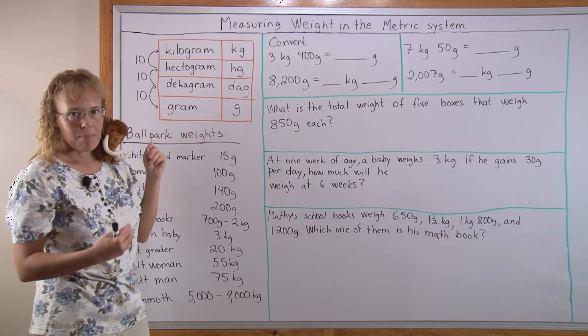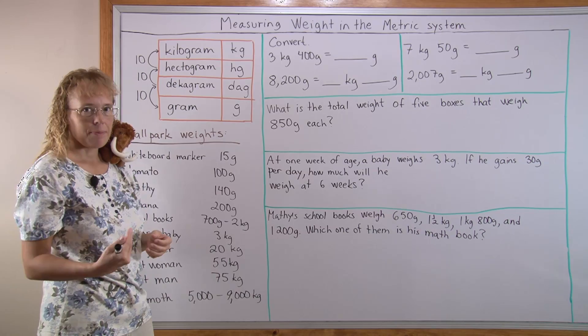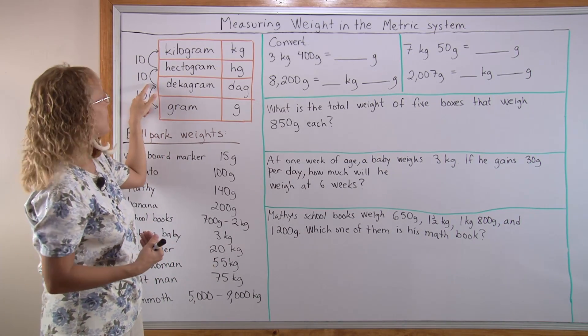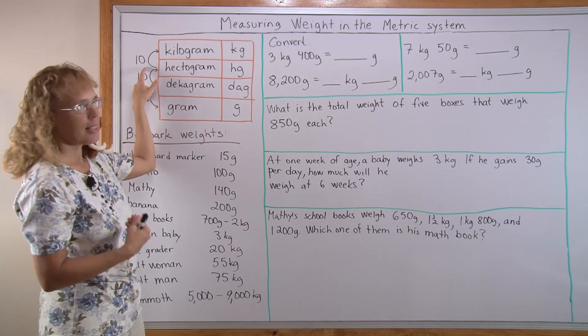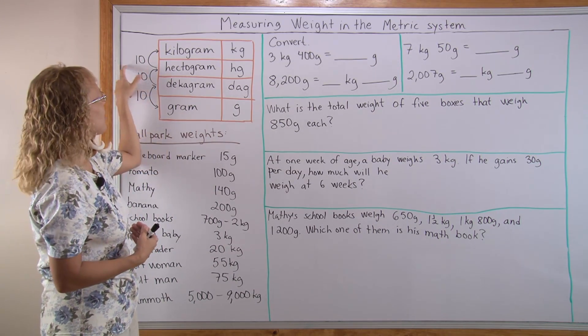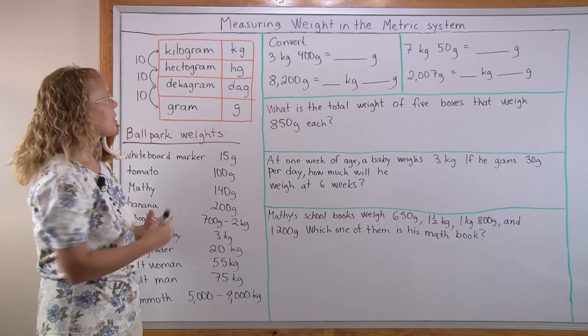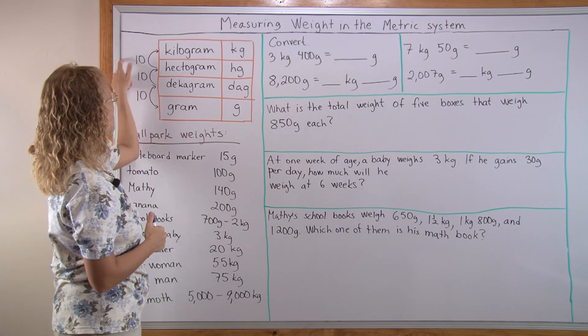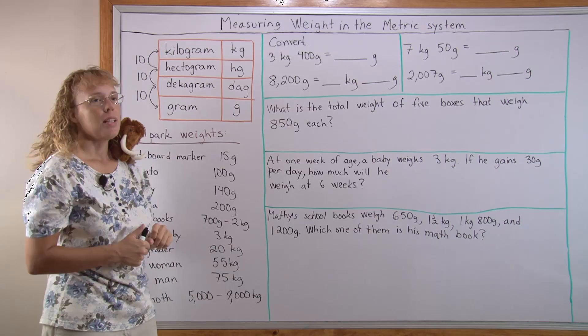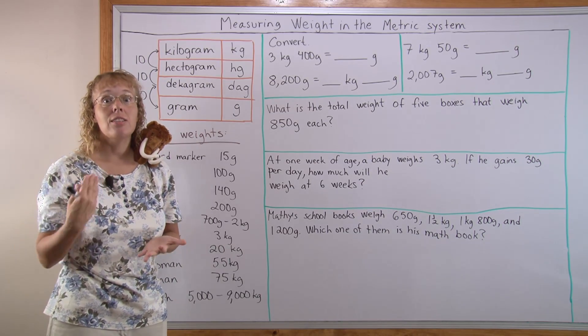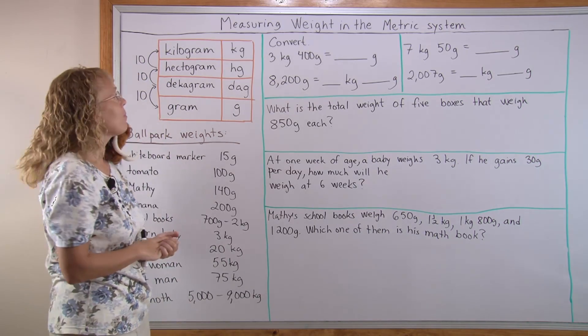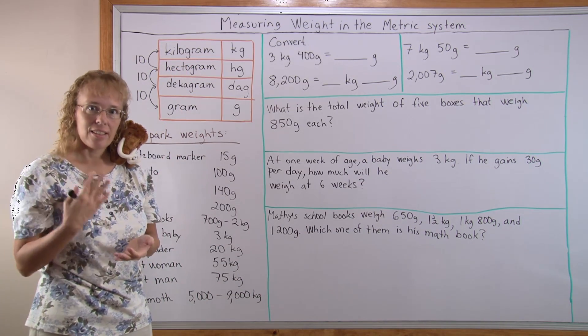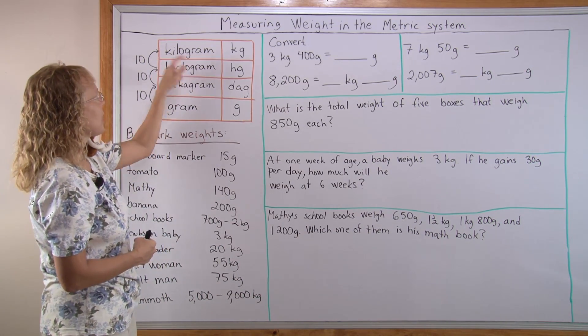We have gram as the basic unit for measuring weight. Ten grams makes a decagram. Ten decagrams makes a hectogram and then ten hectograms makes a kilogram and that makes one kilogram to be a thousand grams because you have ten times ten times ten. So one kilogram is a thousand grams and that's important to remember. You want to also remember that this word kilo means a thousand, this prefix here.